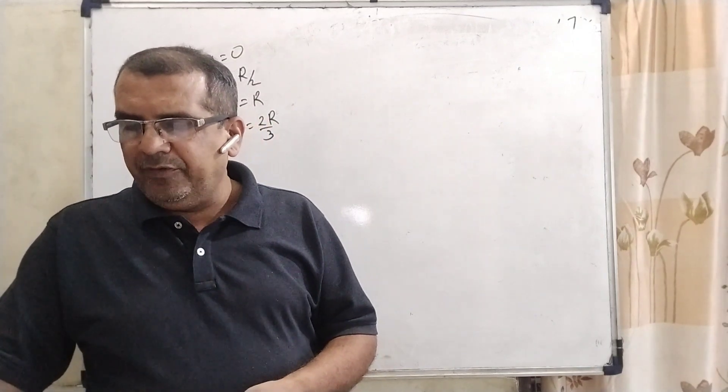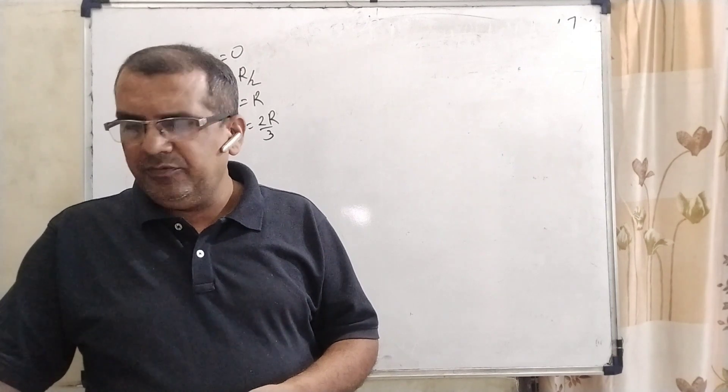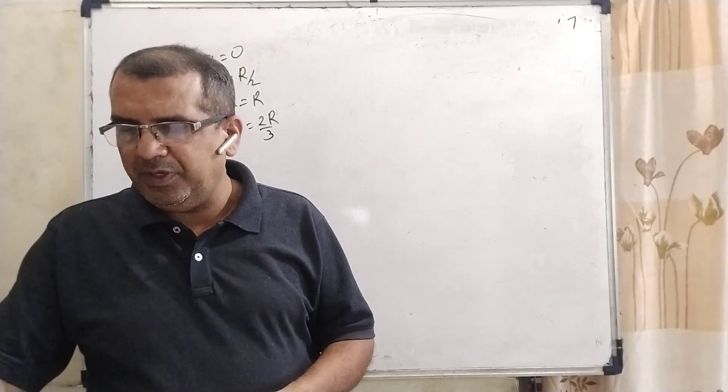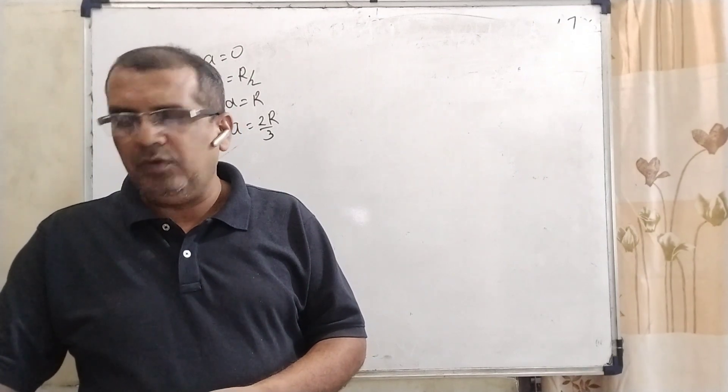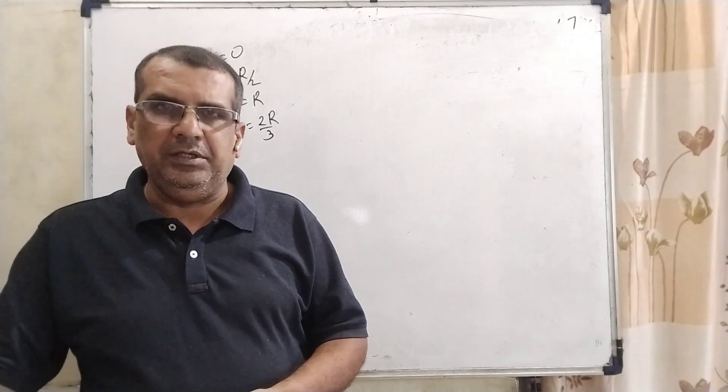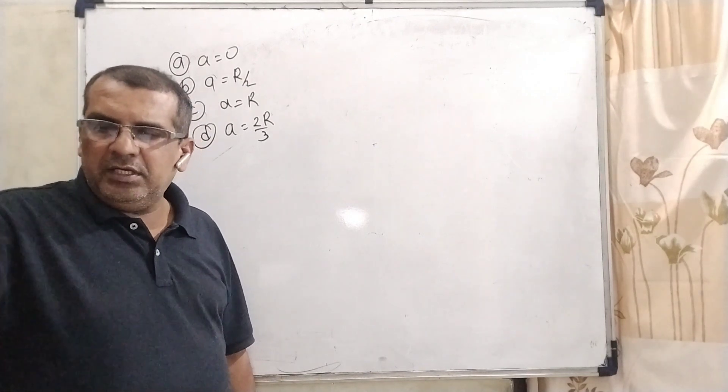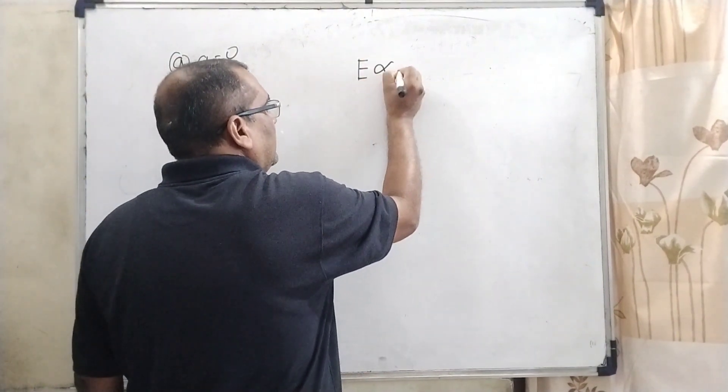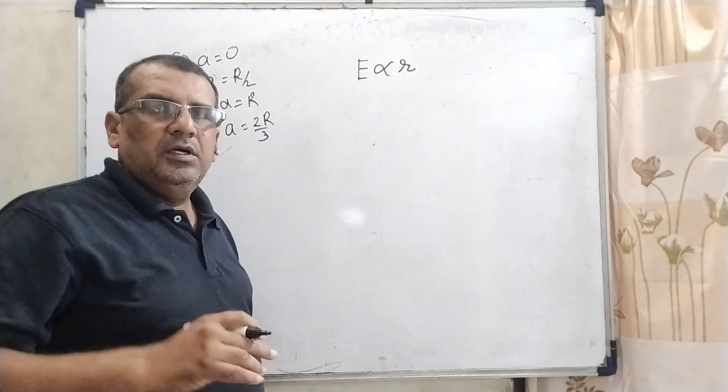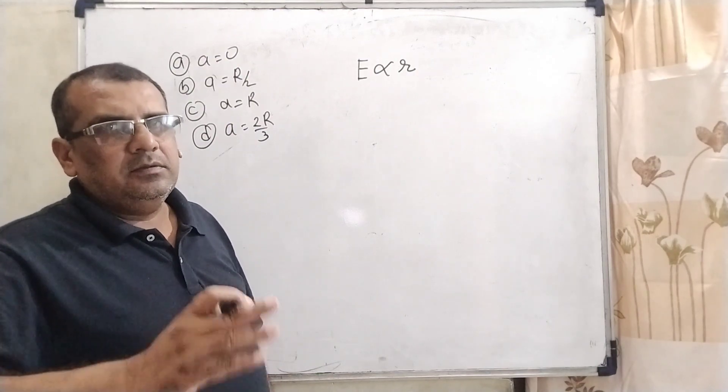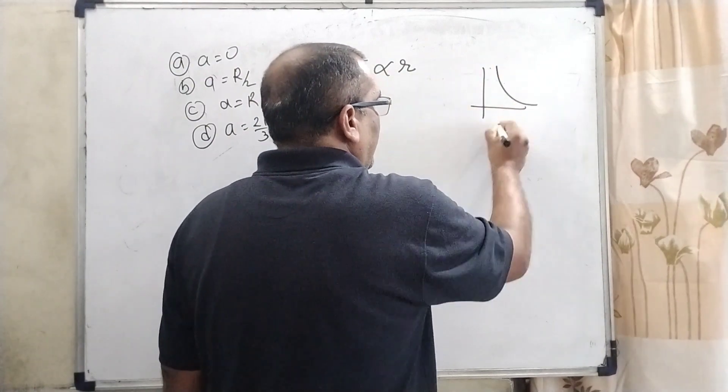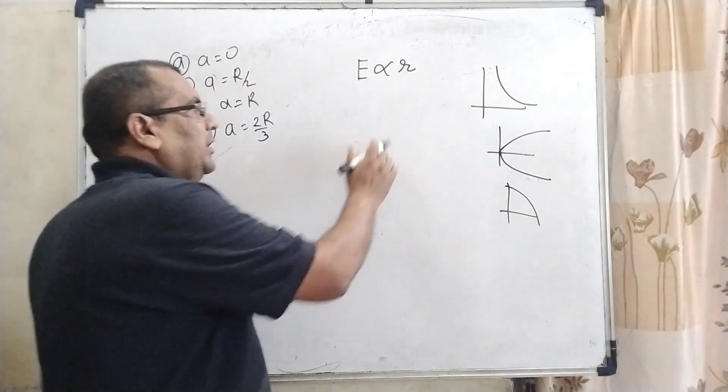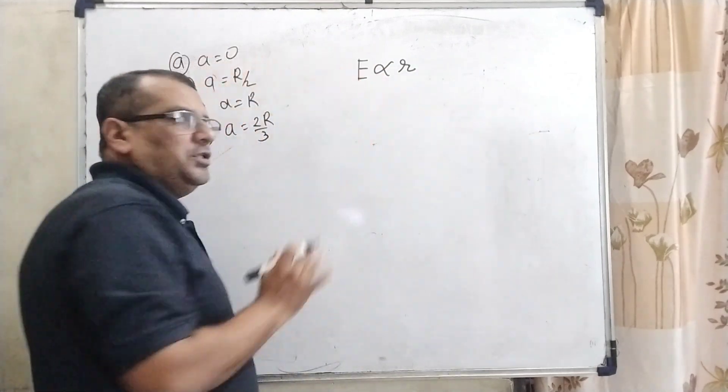Now the fourth question is that the electric field within the nucleus is generally observed to be linearly dependent on r, small r. This implies: option A, a equal to 0; option B, a equal to r by 2; option C, a equal to r; and option D, a equal to 2r by 3. Now in the question here given that the electric field within the nucleus is generally observed to be linearly dependent on r. What is dependent on r linearly? Linearly means power is 1. Whenever we have to take power 2, that means parabolic. And 1 by r, that is reciprocal. So it is reciprocal 1 by r square.